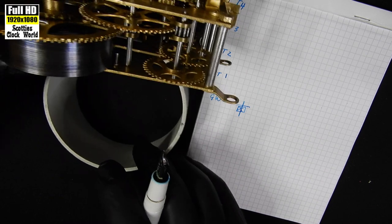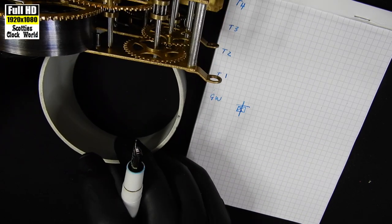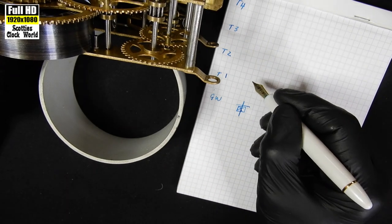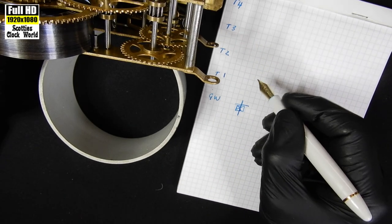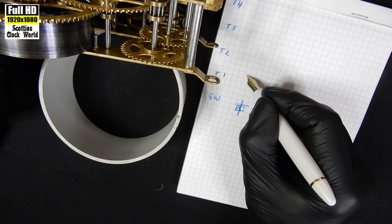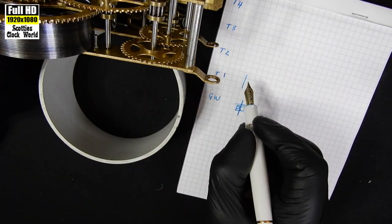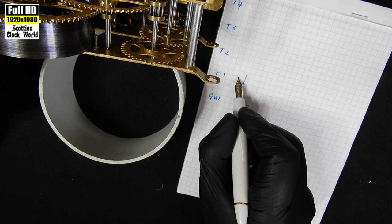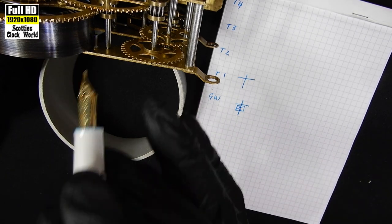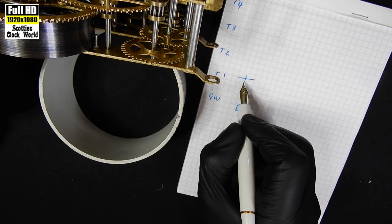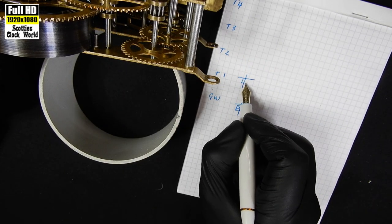Then we look at T1, which is that wheel there. Once again, it has an arbor. The teeth are up the top on the wheel and that's a wheel running across there. This piece down here is called a pinion and that is drawn with a small square underneath.